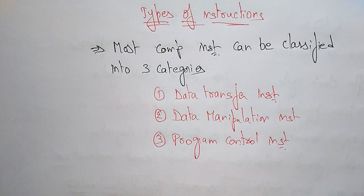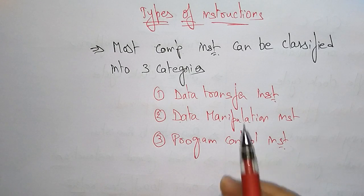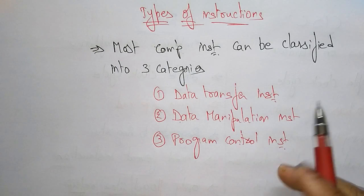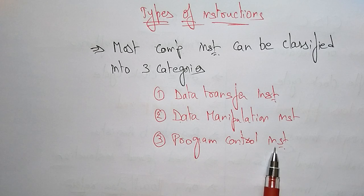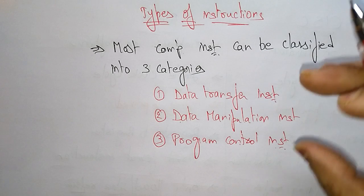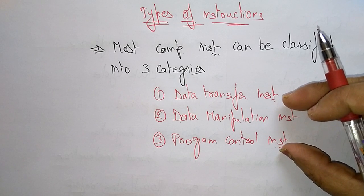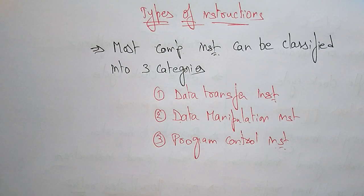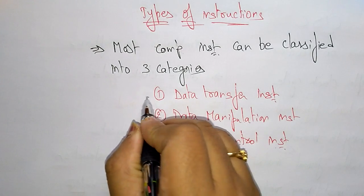Data transfer instructions transfer data from one device to another. Data manipulation instructions perform operations by the ALU. Program control instructions control the system. With the help of these three categories, most computer systems can perform their operations.